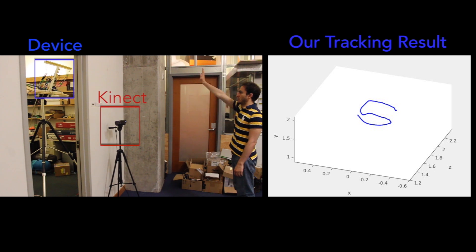We compare the device's output to that of a Kinect placed directly in front of the person and show the Kinect's output in red. In comparison to Kinect, our median error is around 2 centimeters.